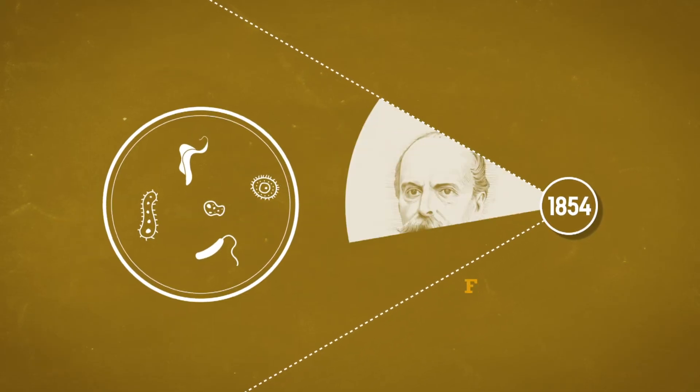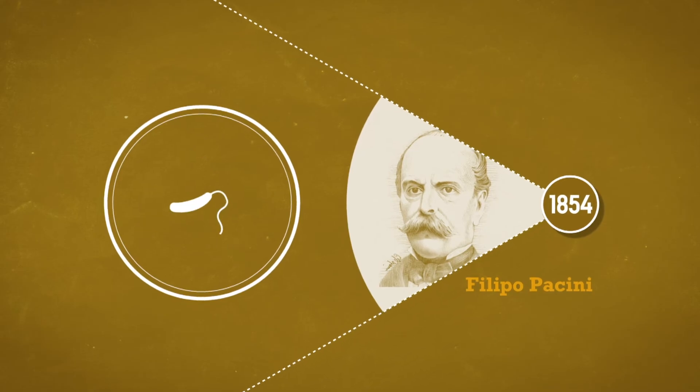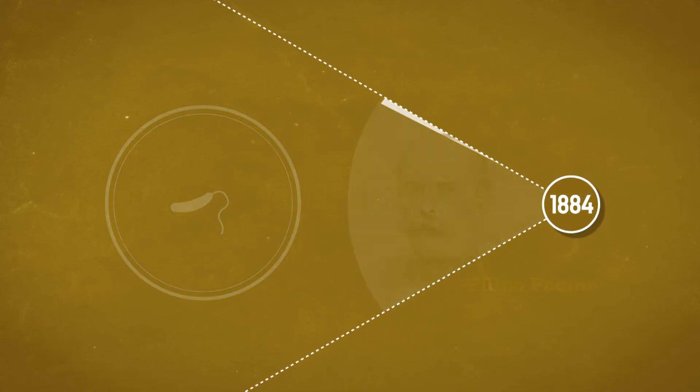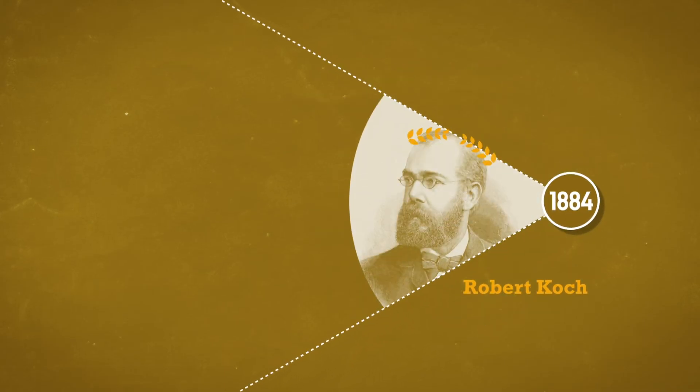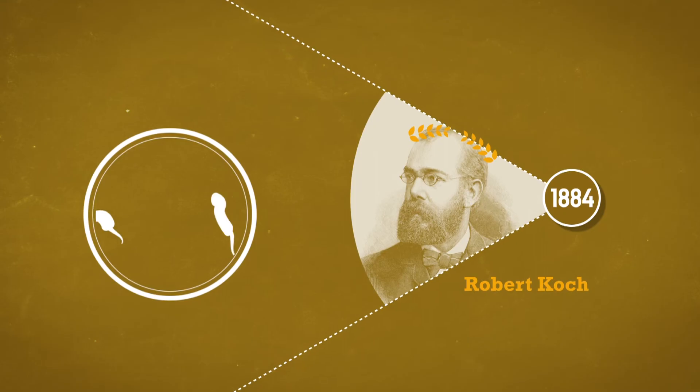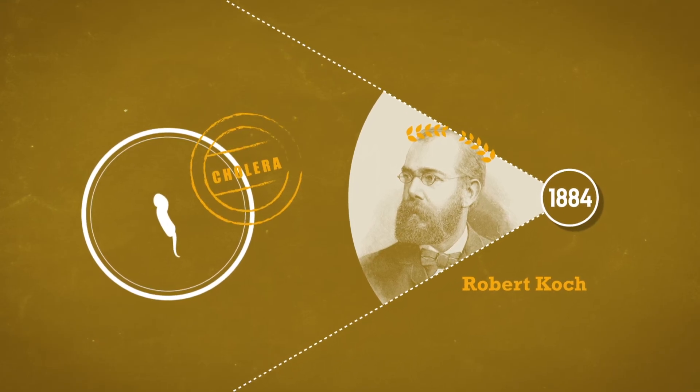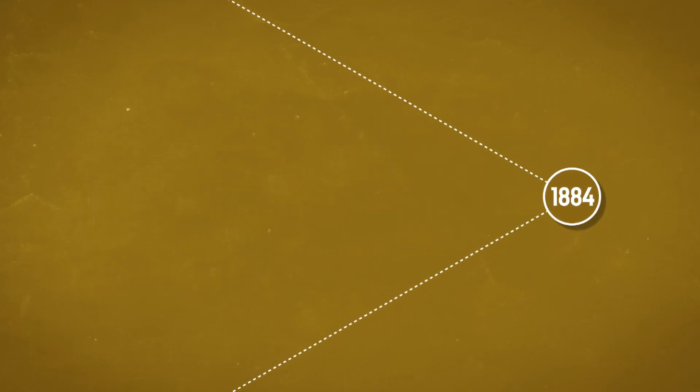In 1854, the Italian Filippo Pacini isolated the bacteria. Thirty years later, Robert Koch, the German physician famous for discovering the tuberculosis bacteria, took all the credit for showing that the comma-shaped bacteria is indeed the cause of the disease.